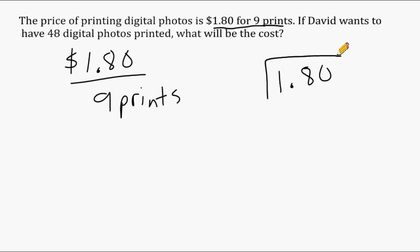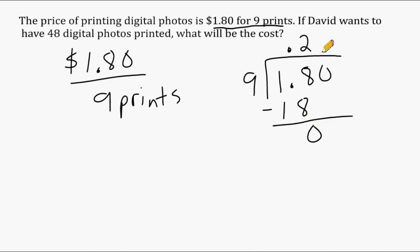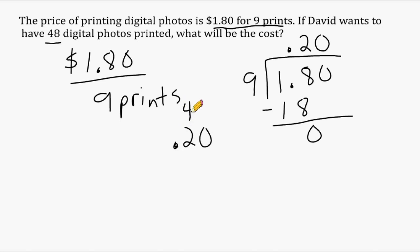We take $1.80 and divide by 9. Bring the decimal straight up. 9 fits into 18 twice — but more precisely, 9 fits into 1.8 two-tenths of a time. 2 times 9 is 18, which gives us zero remainder. We can't leave that place value blank, so we put a zero on top. David is paying 20 cents for each digital print. Once we know the unit rate, we multiply 20 cents by 48 prints.